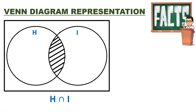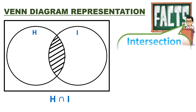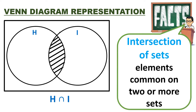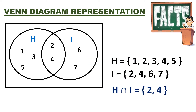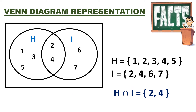Intersection is the next Venn Diagram representation. Intersection of sets refers to elements common to two or more sets. In the given figure, all the elements found in the shaded area are the intersection of set H and set I. For our example, H intersection I are the elements found common to both sets. In the given figure, the intersection contains 2 and 4.